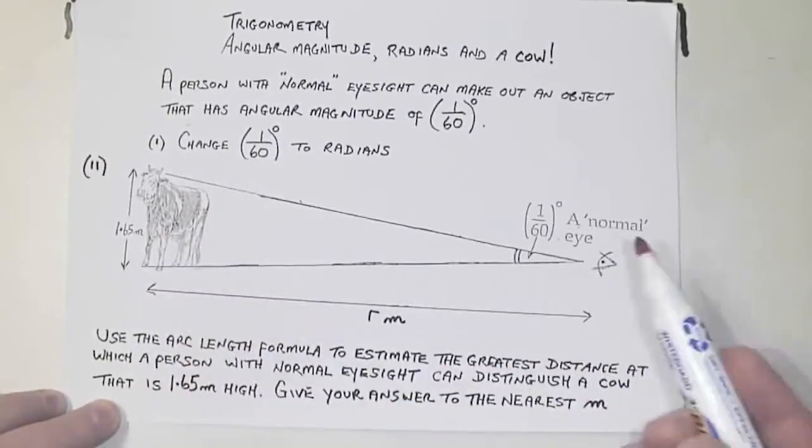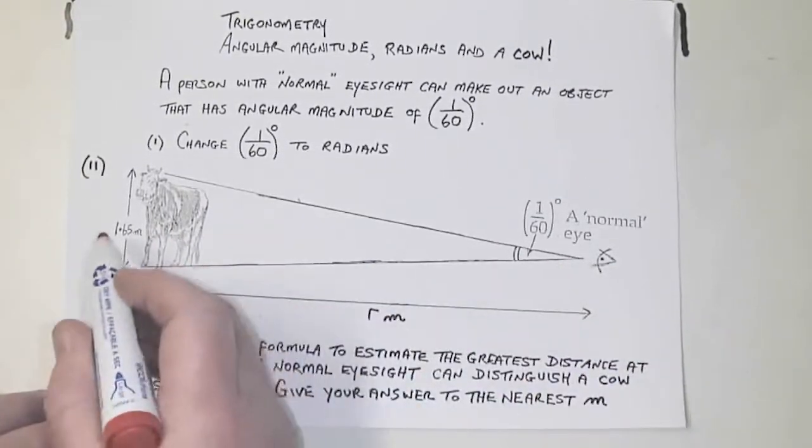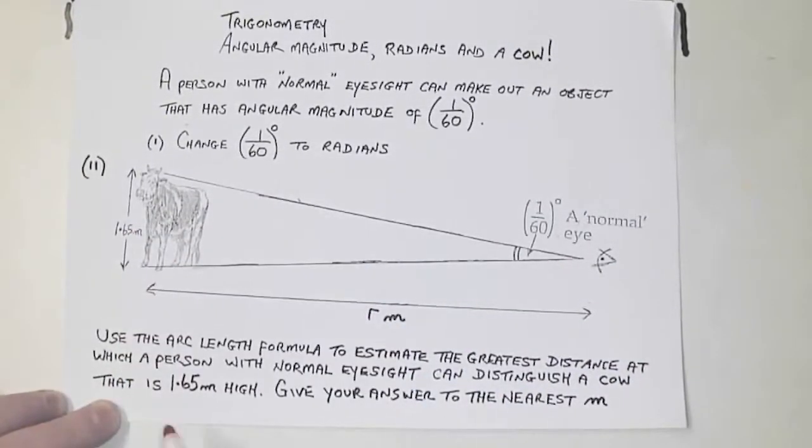Here's a picture of a cow, and here's an eye, and somebody's looking at a cow. The cow is 1.65 meters tall. Use the arc length formula to estimate the greatest distance that a person with normal eyesight can distinguish a cow that is 1.65 meters high. Give your answer to the nearest meter.